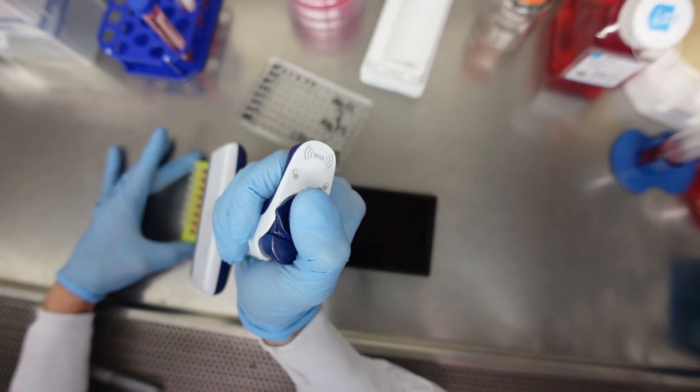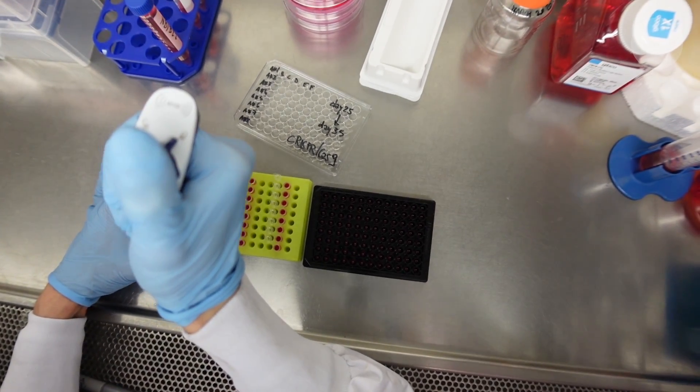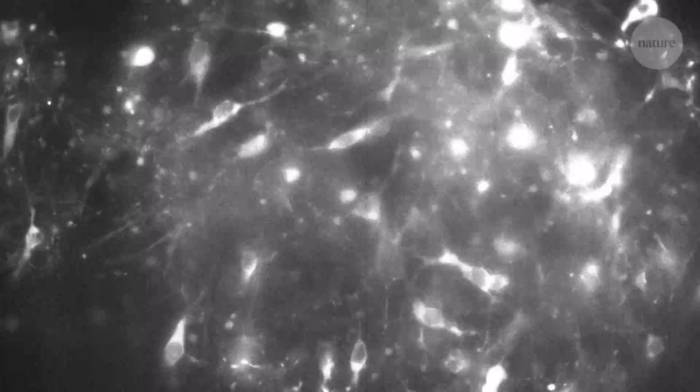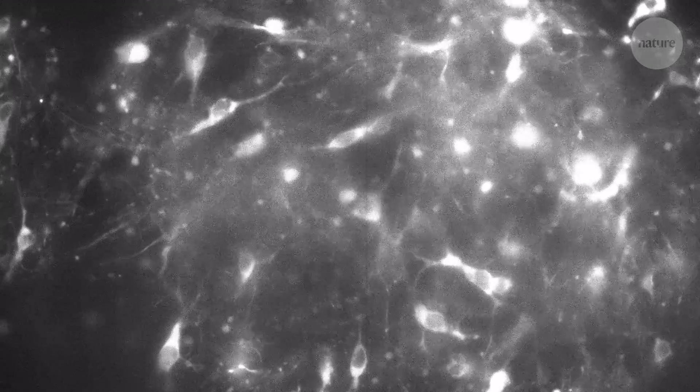That led the team to wonder if these marks were helping control the pace of cell development. So the researchers knocked out the genes that controlled the levels of the relevant marks, and the neurons started maturing faster.